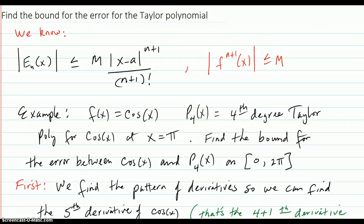Find the bound for the error for the Taylor polynomial. We know our formula for the error bound. Here's your example: say f of x equals cosine x, and P4 is the fourth degree Taylor polynomial for the cosine at x equals π.